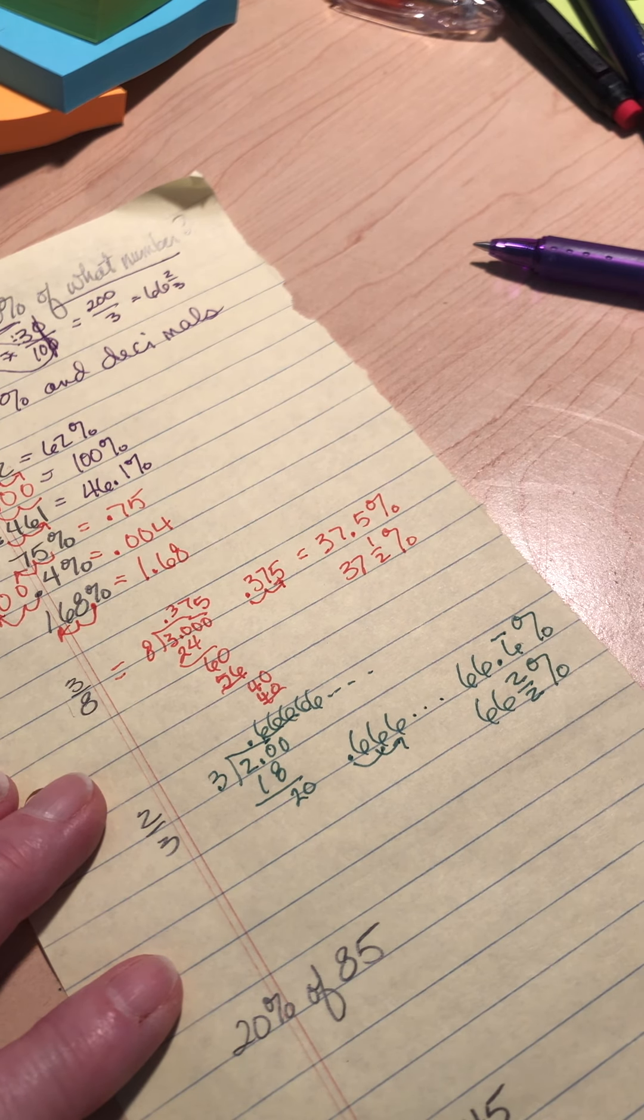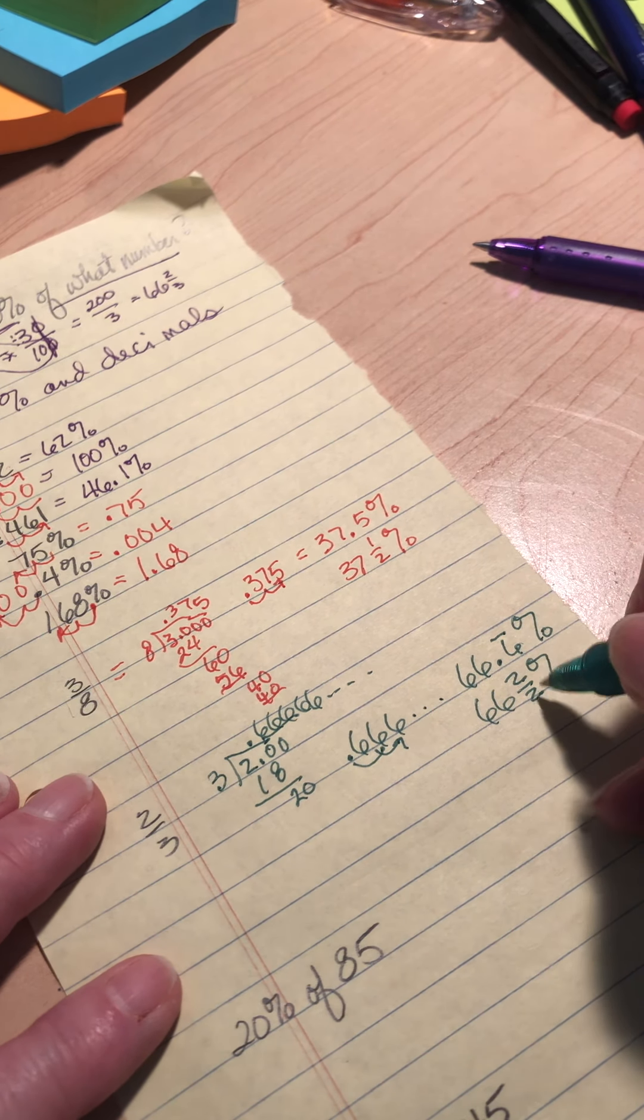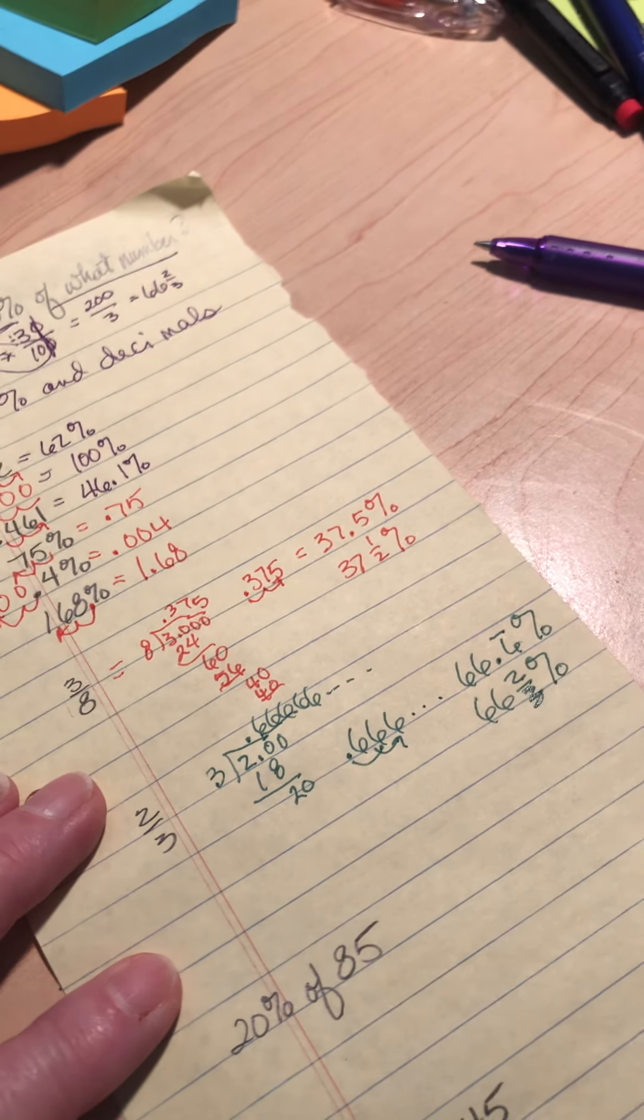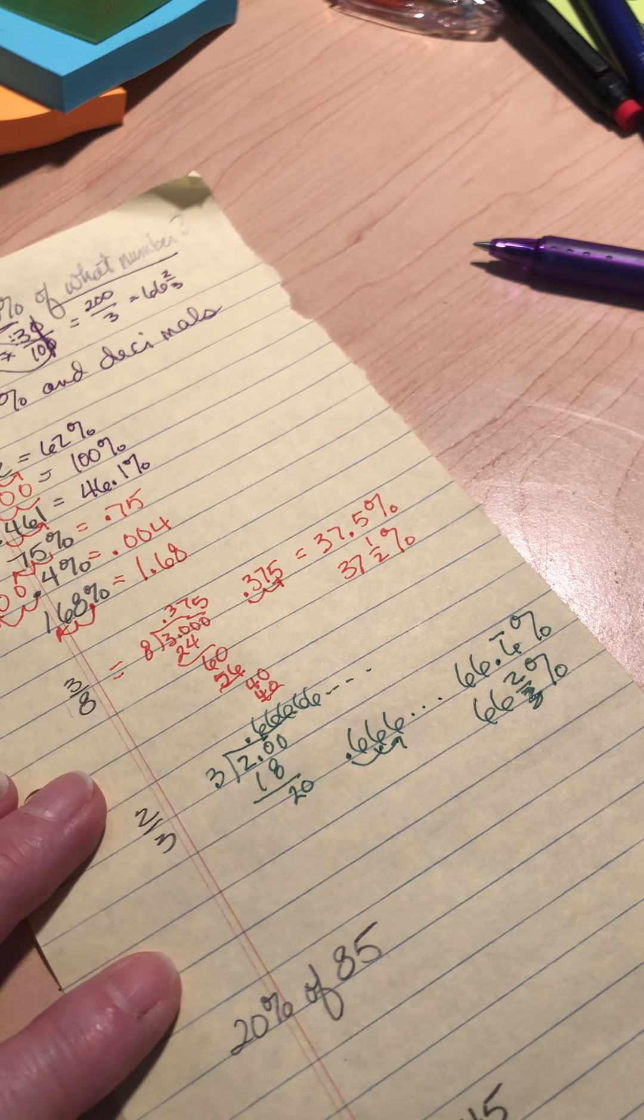Because most calculators don't have a repetend key, but they've got a fraction key. Does that make sense? All right.